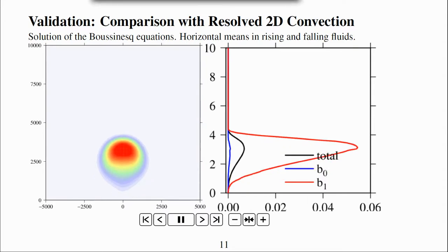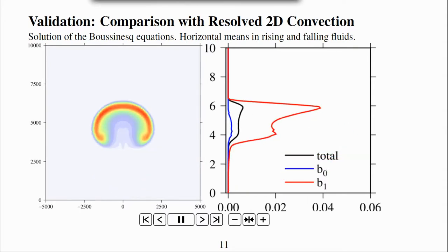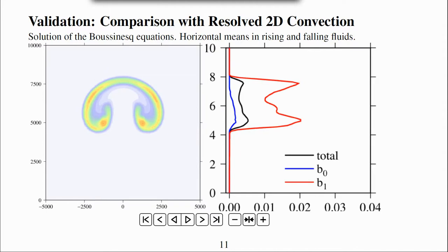After a thousand seconds, the buoyant fluid has risen to near the top of the domain. In the horizontal means, there is some positively buoyant fluid in the sinking fluid.